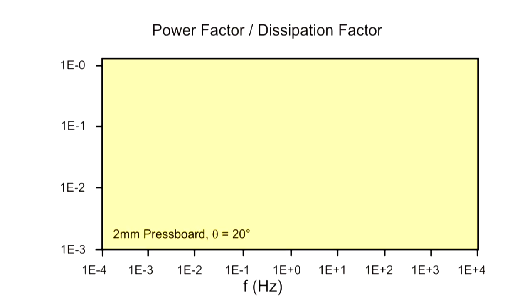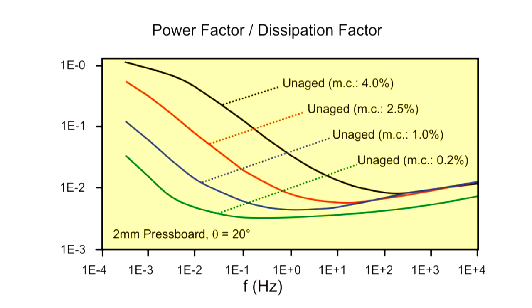The dissipation factor or the power factor depends strongly on the water content of the cellulose in oil. This curve is the result of relatively dry cellulose with water content of 0.2%. This curve has 4% water content.